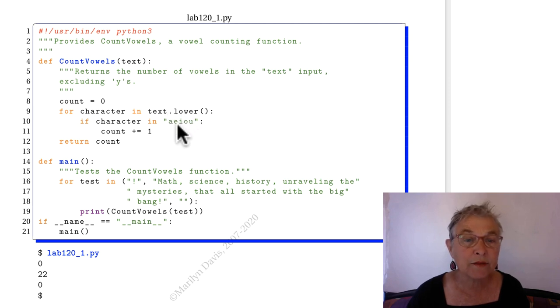I lowercase it so that I didn't have to type so much here. However, if the character that comes out of that for loop is in my string of vowels, then I add one to the count and return that count. Well, it's a simple function.